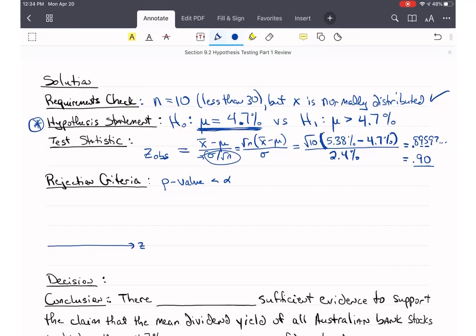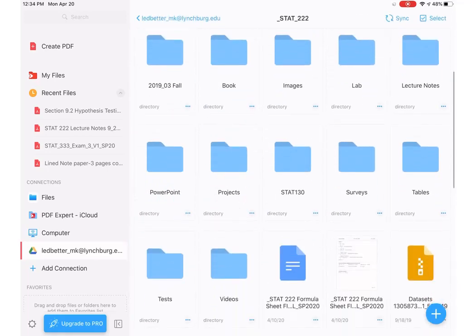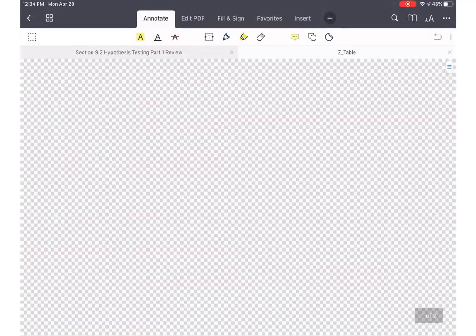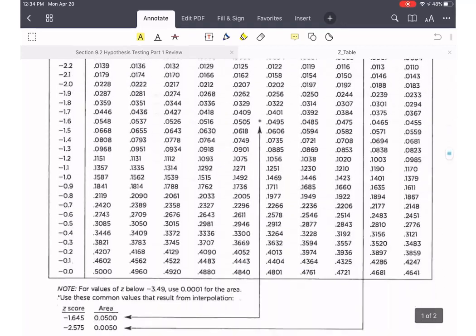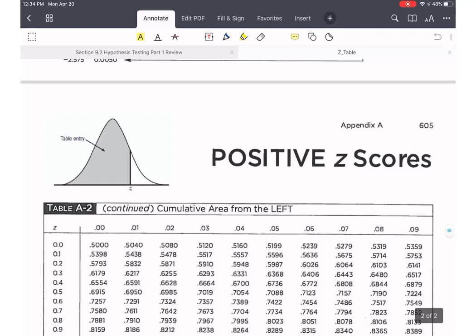So my p-value, I need to take this observed, my test statistic value, which is z-observed. And z-observed is a 0.9, that's positive. And then, because I'm looking for a p-value, it's going to be the area that's farther away from zero. Always, it's going to be a more extreme value. So our test statistic is 0.9, and we need to find this area. I need to find a positive 0.90. So I'm lining this up. I need a 0.9, which is over here, and then a 0.